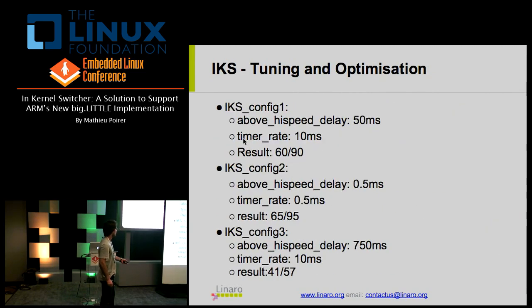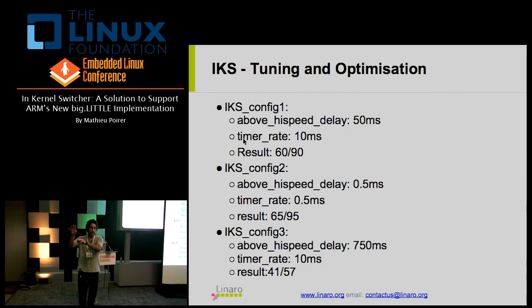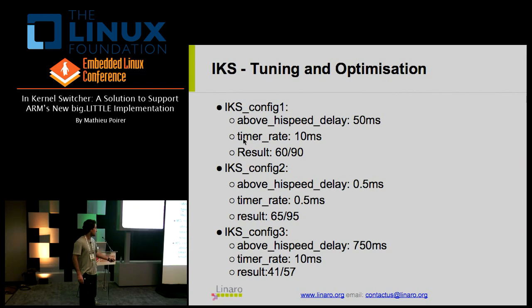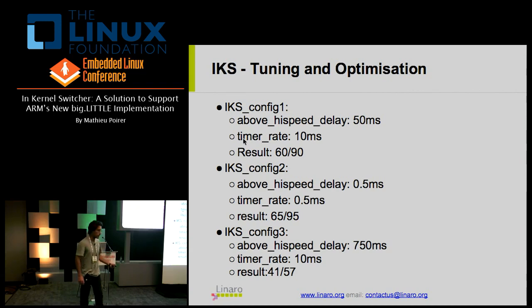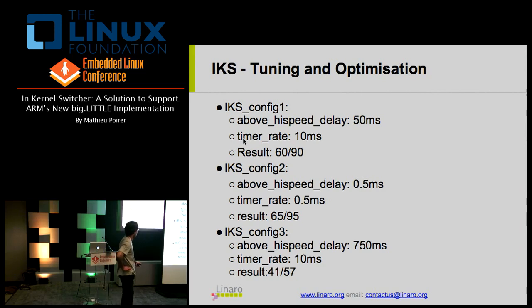These are the configuration numbers for the tuning that yielded the blue diamond (90% performance, 60% power), the red box (95% performance, 65% power), and the green triangle (poorly tuned) performance points shown earlier.